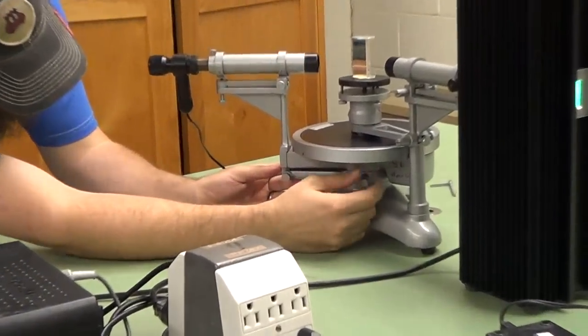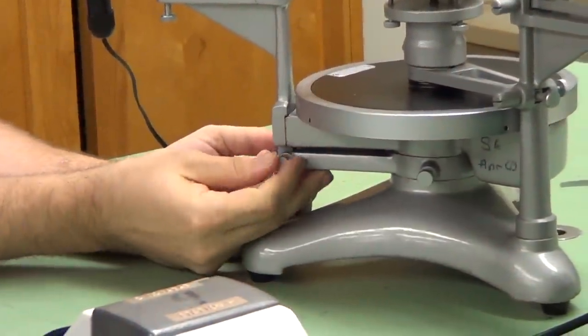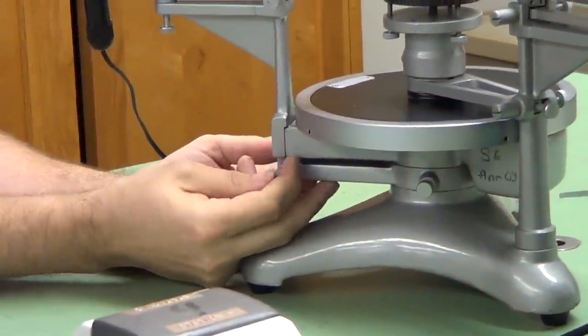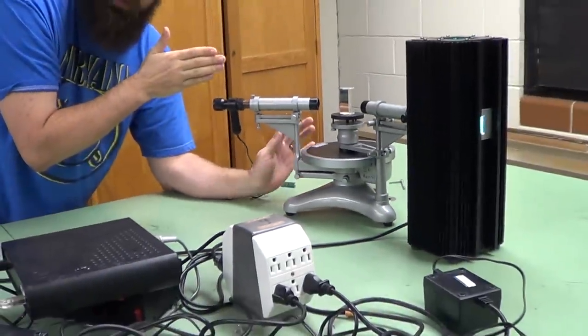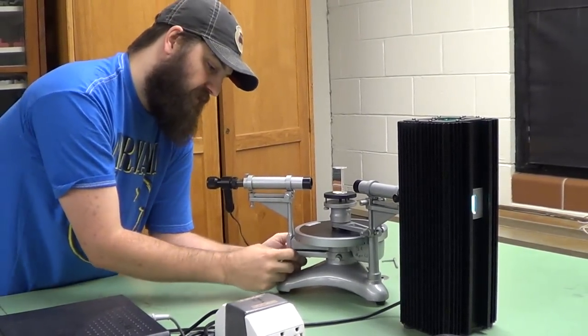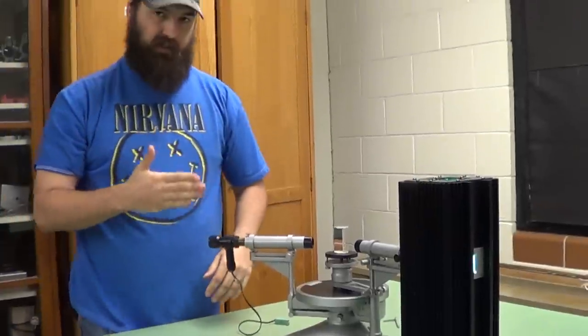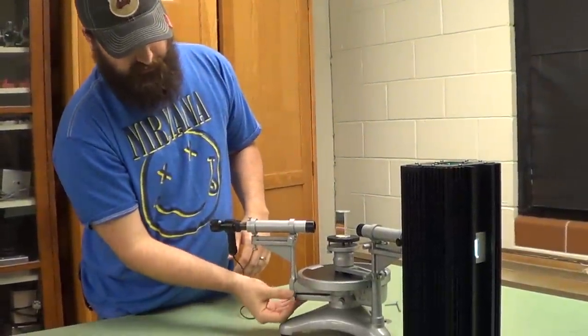You can also, once you get your scope roughly where you need it to be, do some fine adjustment with this screw down here. And what this does is just move the scope relative to the image that you see in very small increments. So if you can't quite get exactly on the line, you can lock down your scope and use the fine adjust to get closer.